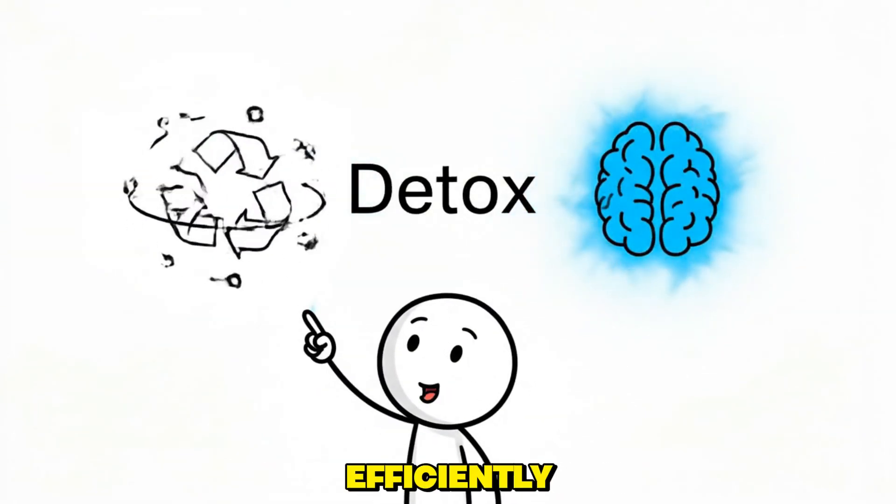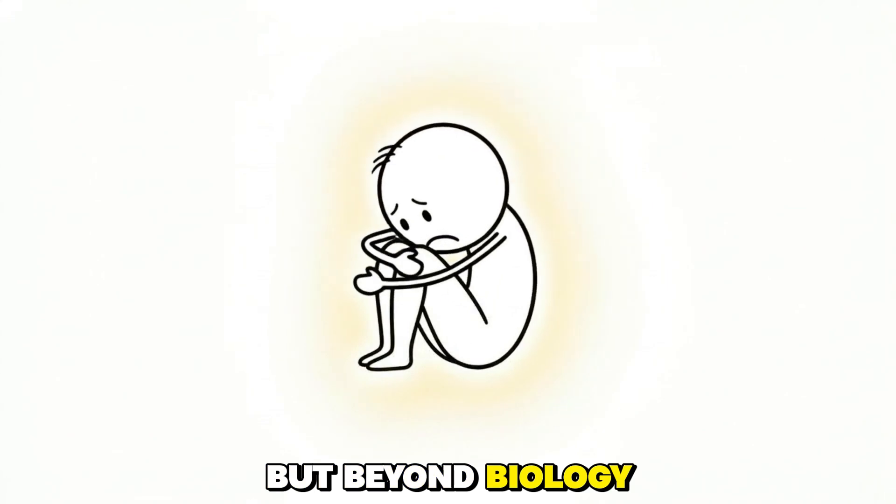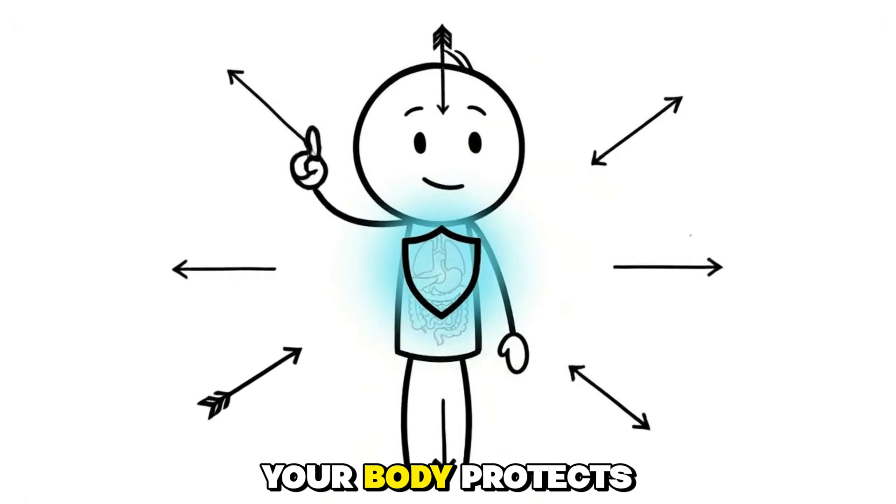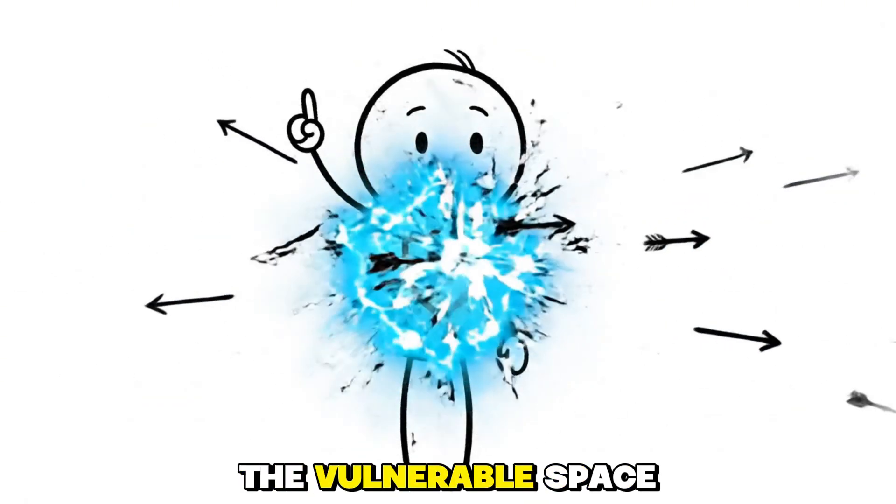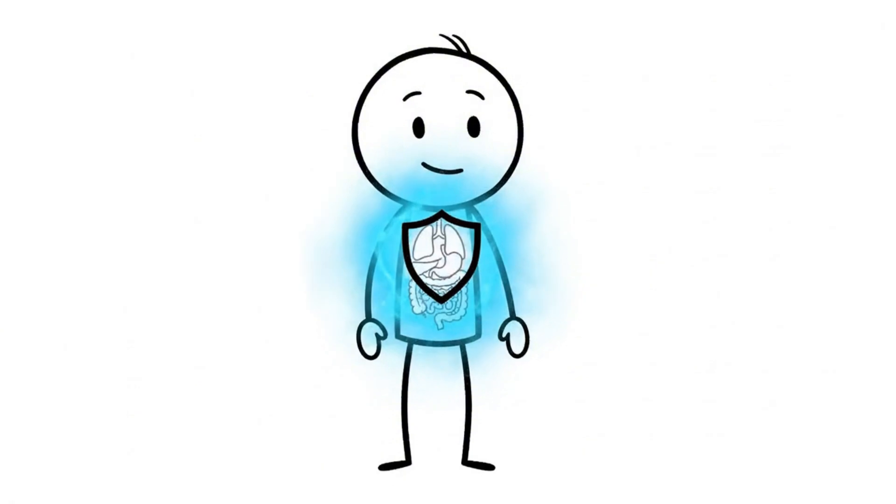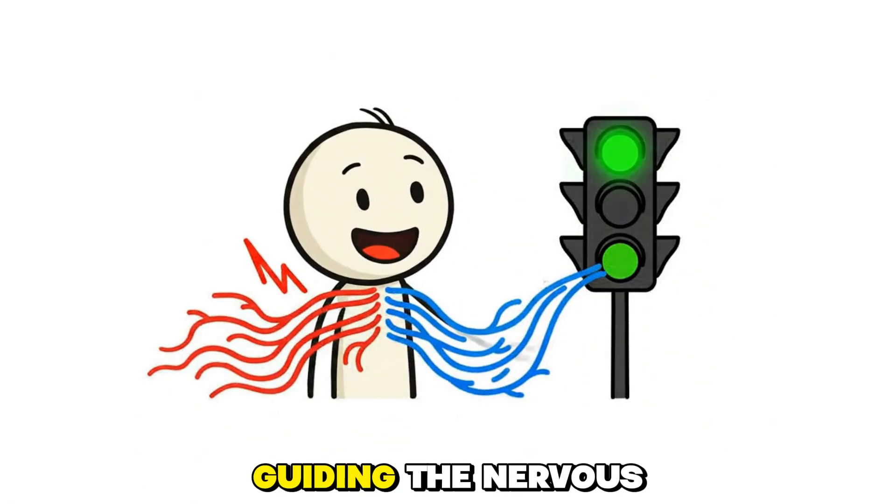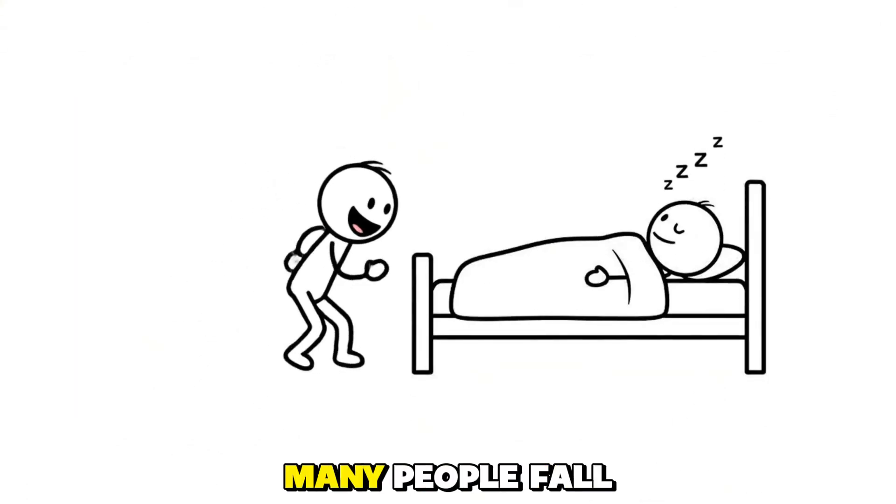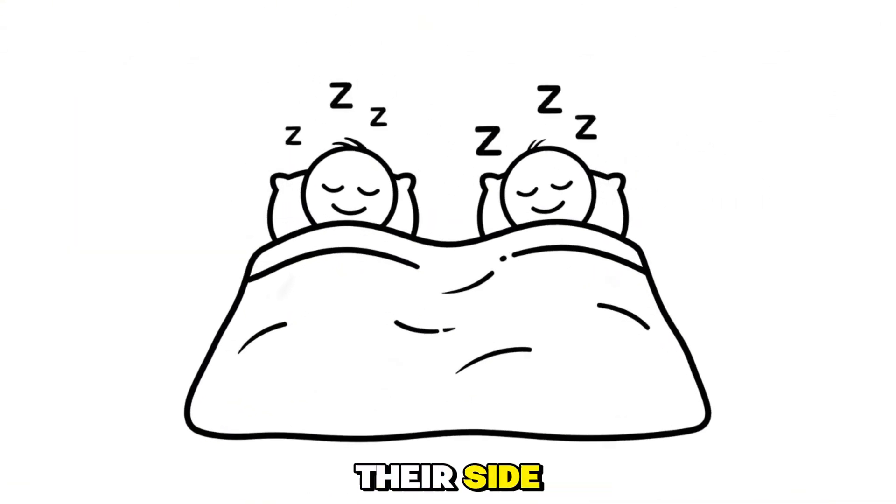But beyond biology, something emotional unfolds when you curl slightly inward. Your body protects your chest, your organs, and the vulnerable space around your heart. This posture signals safety, guiding the nervous system into a calmer restorative mode. That is why many people fall asleep faster when resting on their side.